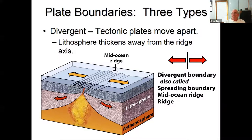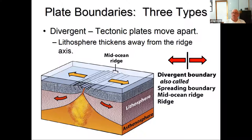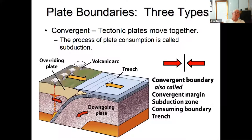Moving plates on a sphere creates three possible boundary configurations. First is a divergent margin — tectonic plates moving apart, creating new lithosphere at a ridge. The material gets thicker as you go away from the ridge since it's thinnest right at the breaking point. These are also called spreading boundaries, mid-ocean ridges, or constructive margins. Second is a convergent margin — the Ring of Fire — where plates come together and one dives down underneath the other in a process called subduction, associated with volcanoes and the very largest earthquakes.